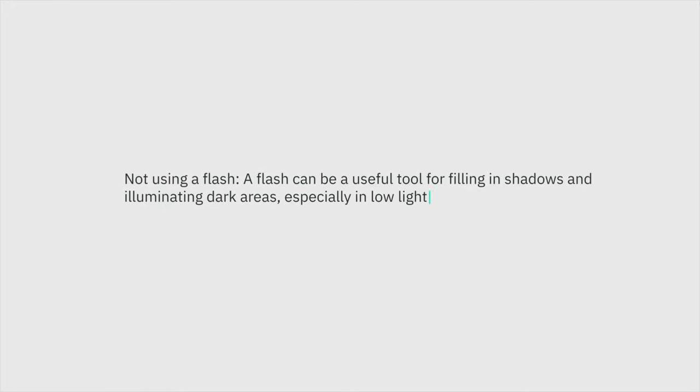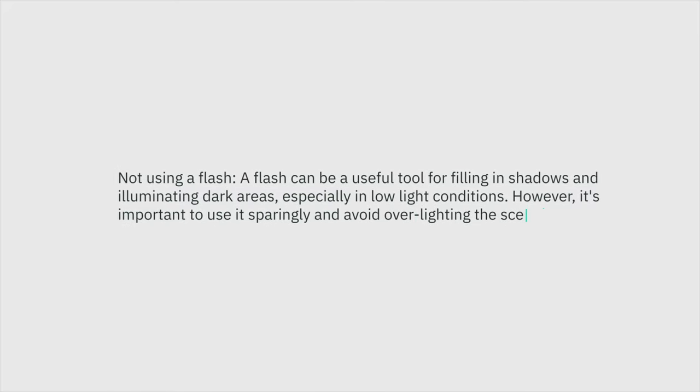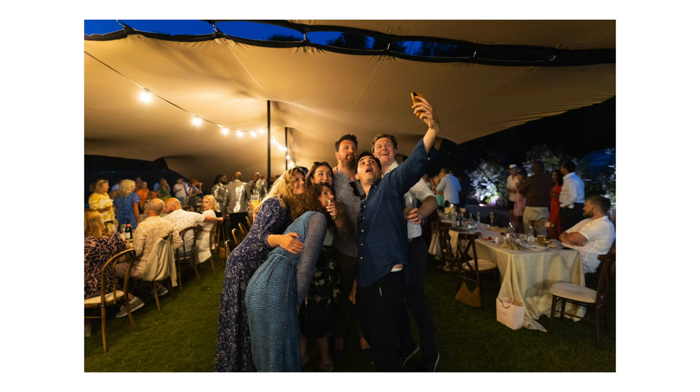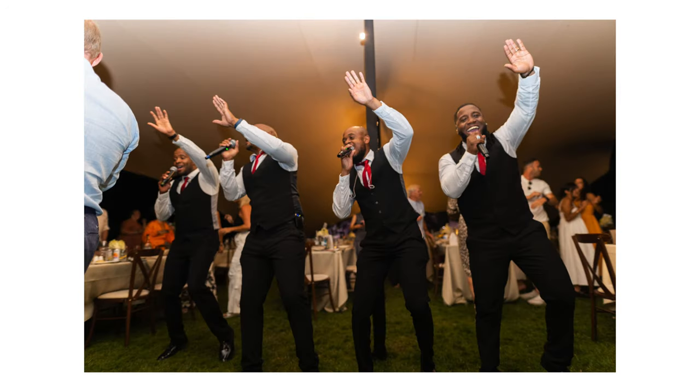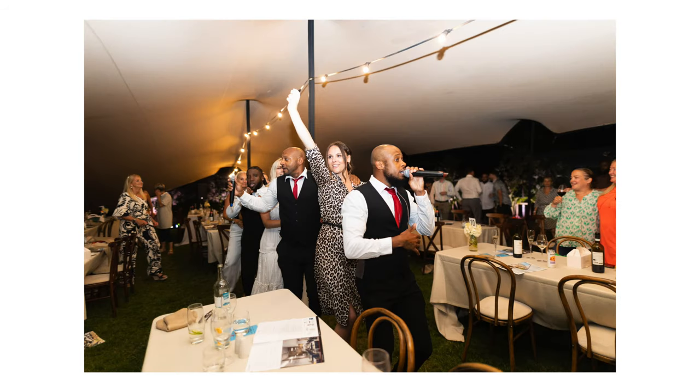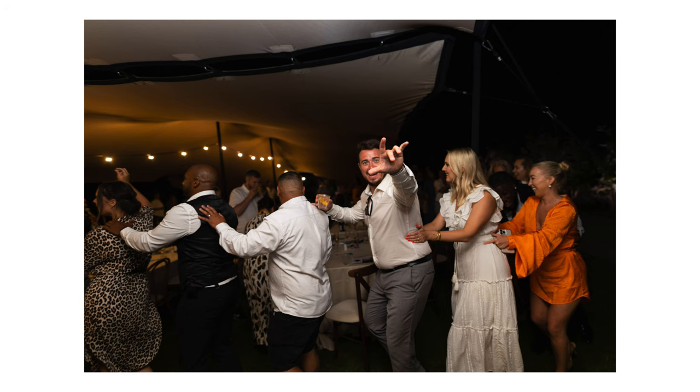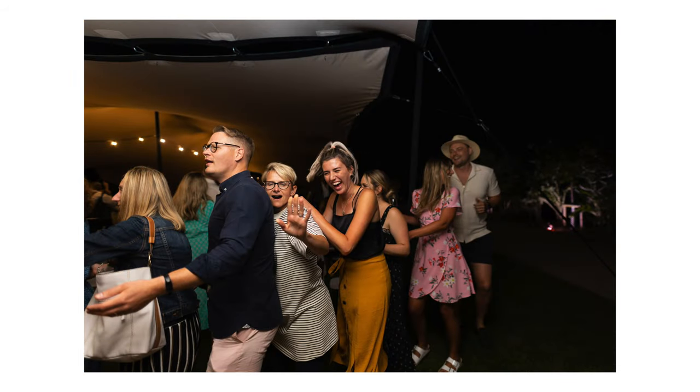Mistake number seven: not using a flash. A flash can be useful for filling in shadows and illuminating dark areas, especially in low light — however, it's important to use it sparingly. I'll go on record: I hate flash photography and will always avoid it when I can, as I tend to shoot in candid situations. That said, flash is essential for studio work, events like weddings, or dark environments. The AI already said it well — use flash sparingly, and learn when it's the right time.